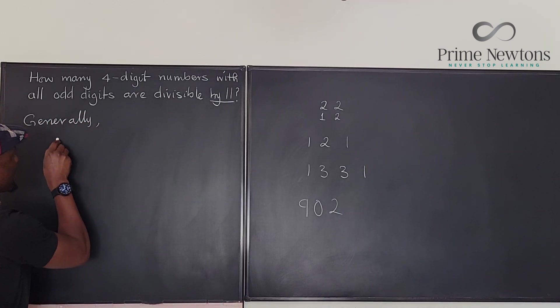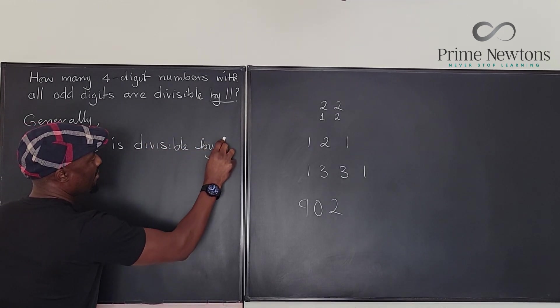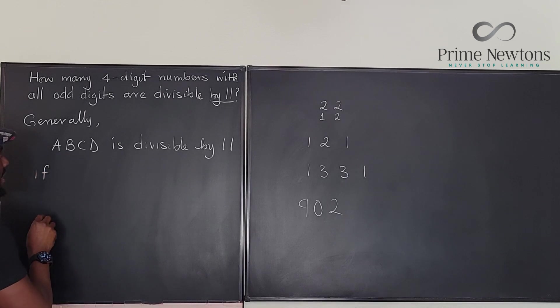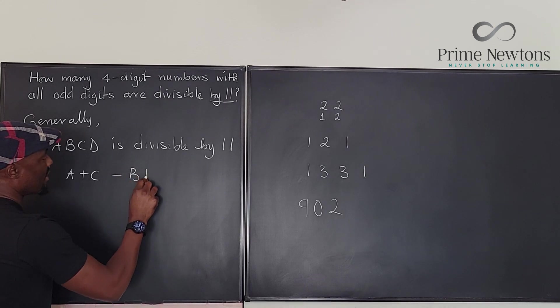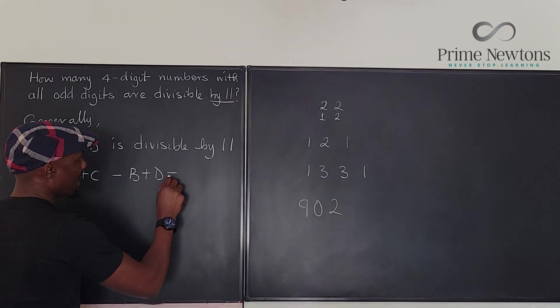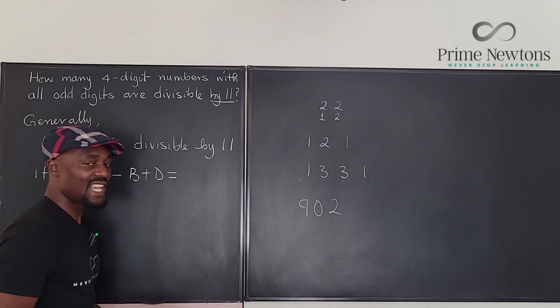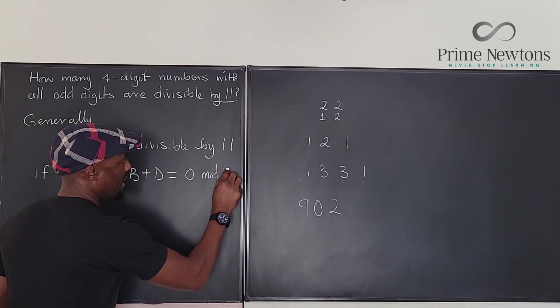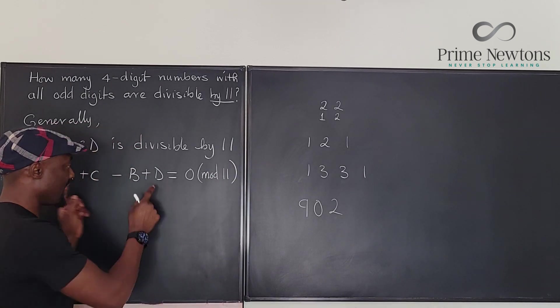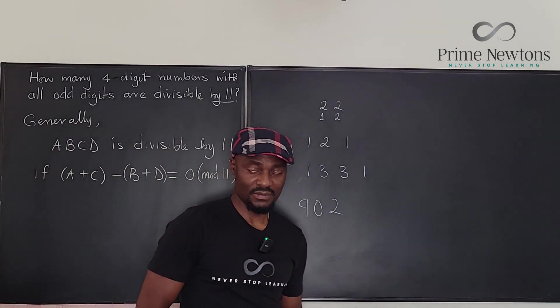Generally, ABCD is divisible by 11 if (A+C)-(B+D) is divisible by 11. We can call it 11K, or we can say it is 0 mod 11. What this means is when you divide this result by 11, the remainder is going to be 0.